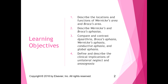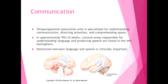We'll also cover agnosia. The temporal-parietal association area, which is the junction between the temporal lobe and the parietal lobe, is specialized for understanding communication, directing attention, and comprehending space. In approximately 95% of adults, cortical areas responsible for understanding language and producing speech are found in the left hemisphere.